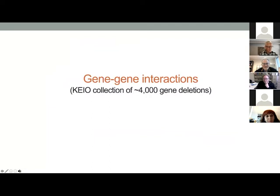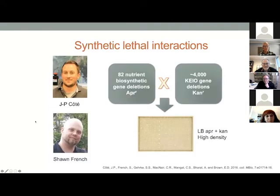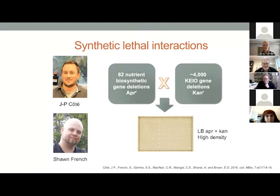We've been interested to take this work a little further, and our work in gene-gene interactions is a nice example. We're looking at two gene deletions showing meaningful interactions — suppression or enhancement. We made in this particular work, with JP and Sean French, a focus on about 80 or so genes involved in nutrient biosynthesis — from the area of vitamin, nucleobase, or amino acid synthesis. These particular deletions, dispensable in rich microbiological media, were crossed with every one of the single gene deletions in the KO collection. The marker in the query strains being apramycin, the marker in the KO collection being kanamycin, then mated to create double deletions.